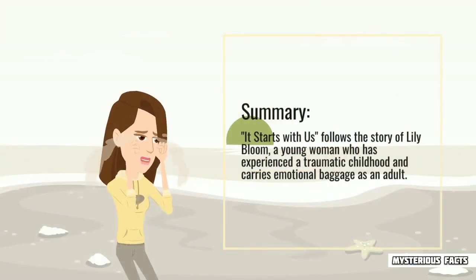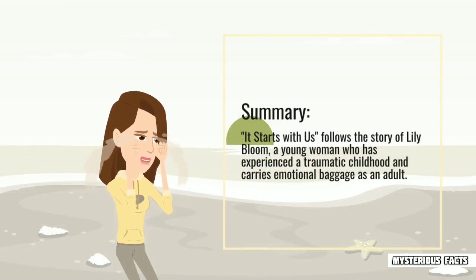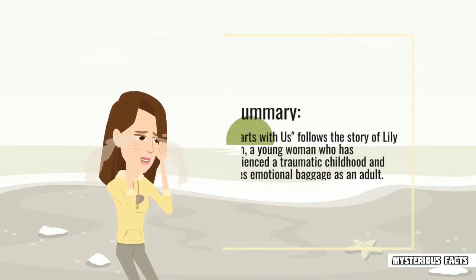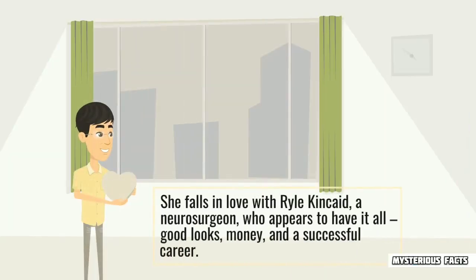Summary. It Starts With Us follows the story of Lily Bloom, a young woman who has experienced a traumatic childhood and carries emotional baggage as an adult. She falls in love with Ryle Kincaid, a neurosurgeon, who appears to have it all — good looks, money, and a successful career.